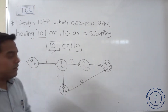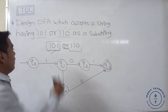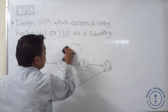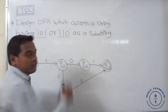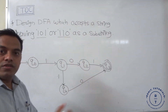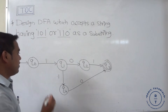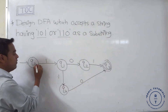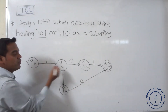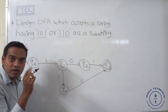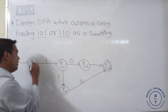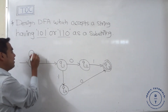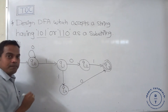What happens whenever at Q0 state, 0 occurs? The transition from Q0 to Q1 is only for input symbol 1. So whenever 0 occurs at Q0, we keep it at Q0 state — a self-loop on 0.